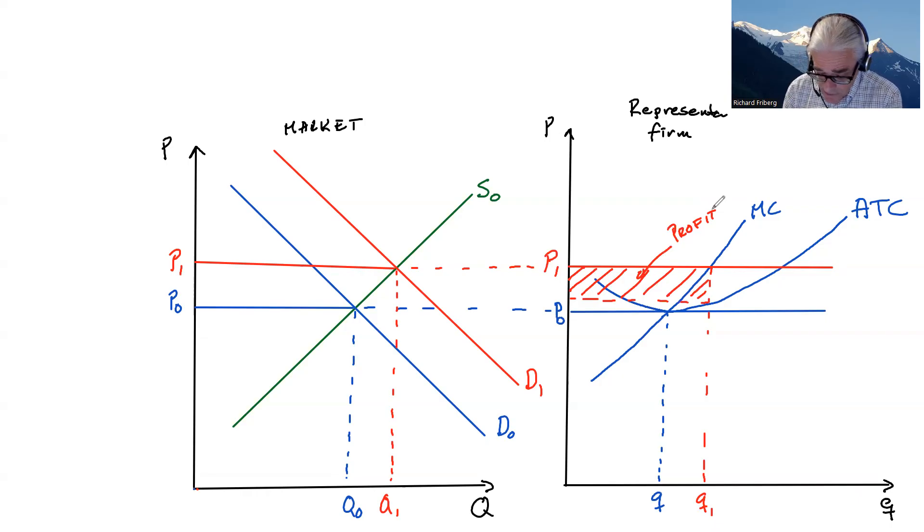In the longer run, however, what do we believe? Well, we believe here are profits to be had. We believe that that will trigger entry. New firms will be coming in. What happens if new firms come in? Well, that shifts the supply curve. How long will firms be coming into the market? Well, as long as there are profits to be had.